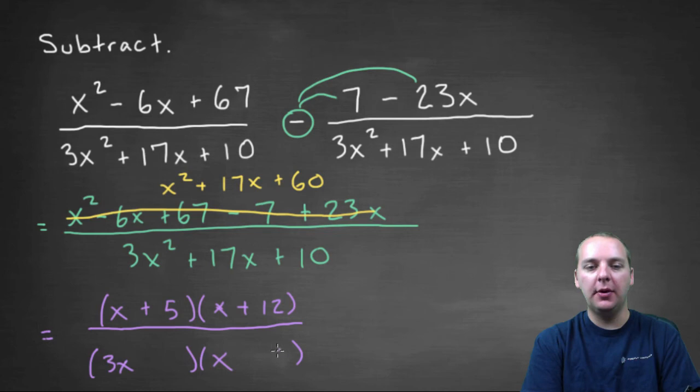I think if I put a 5 here, and a 2 here, I think that would work out, because you would get 3x squared, 15x, and 2x makes 17x, and 2 times 5 gives you 10. So I think that works out pretty well.